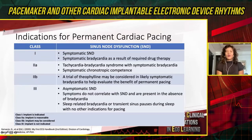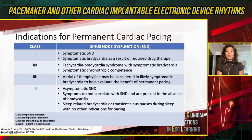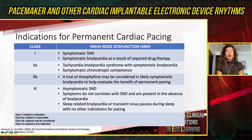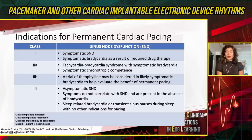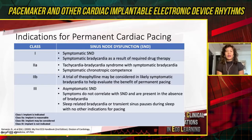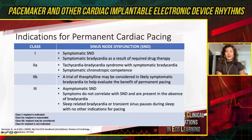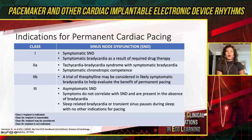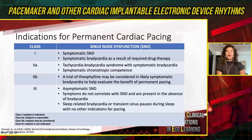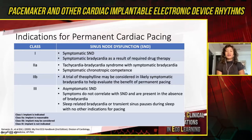Permanent pacemakers have been around for the last five or six decades, but the indications remain the same. They are basically put in for symptomatic bradycardia, of which the first common indication is sick sinus syndrome or sinus node dysfunction. A pacemaker is a class one indication if sinus node dysfunction is symptomatic, or if symptomatic bradycardia results from essential drug therapy. Class 2A includes bradycardia-tachycardia syndrome or symptomatic chronotropic incompetence. Class three — we should not put in permanent pacemakers for asymptomatic, reversible sinus node dysfunction, or sleep-related bradycardia.